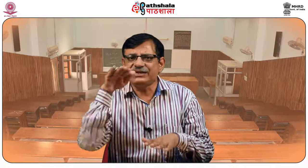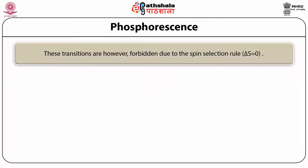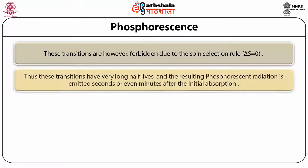The excited molecules can undergo radiationless transitions to lower vibrational levels due to collisions at iso-energic states of the singlets and triplets. This non-radiative process is known as internal conversion, and the molecule is now at the triplet state. Further vibrational deactivation by collisions in the triplet state takes the molecule stepwise down to the lowest level of the triplet state. The transitions from this triplet state to the ground singlet state are responsible for the phosphorescence phenomenon. These transitions are forbidden due to the spin selection rule delta_S = 0, and thus have very long half-lives, with the resulting phosphorescence radiation emitted seconds or even minutes after the initial absorption.